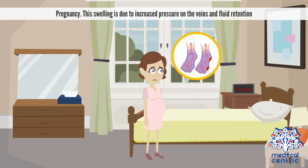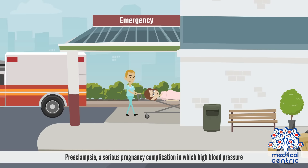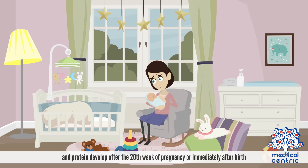Pregnancy — this swelling is due to increased pressure on the veins and fluid retention. Preeclampsia — a serious pregnancy complication in which high blood pressure and protein develop after the 20th week of pregnancy or immediately after birth.